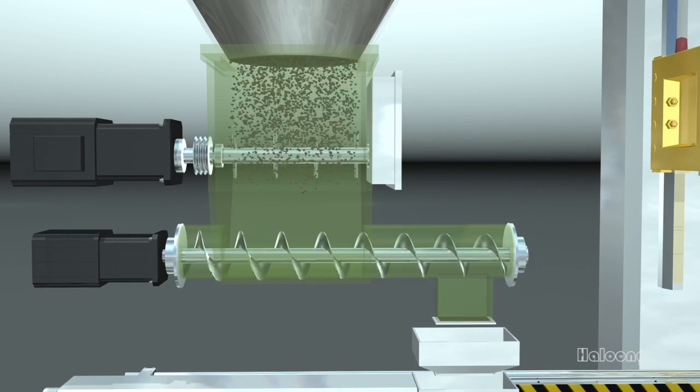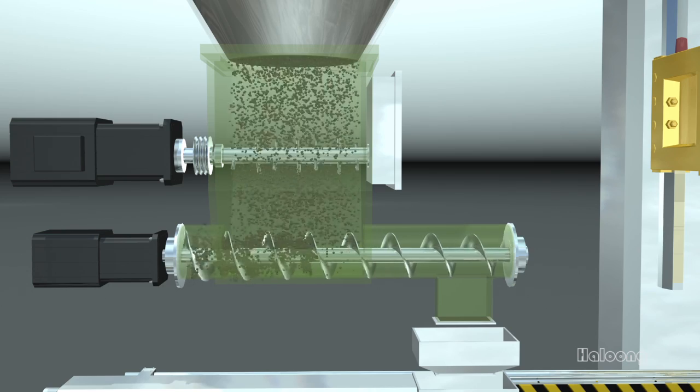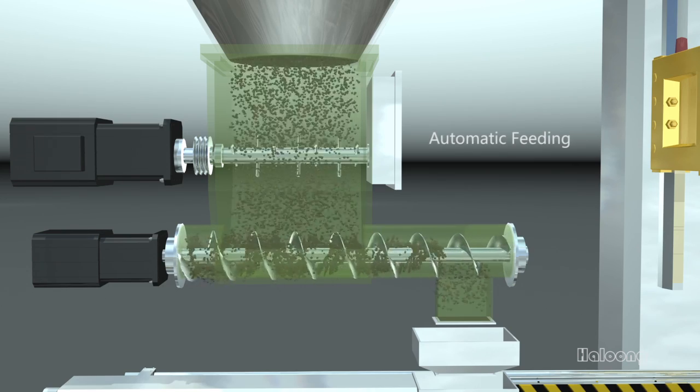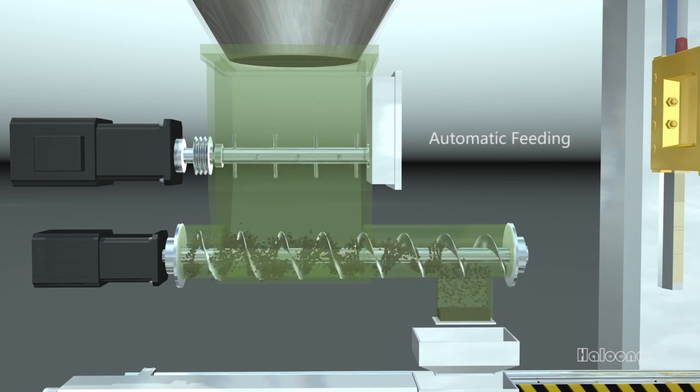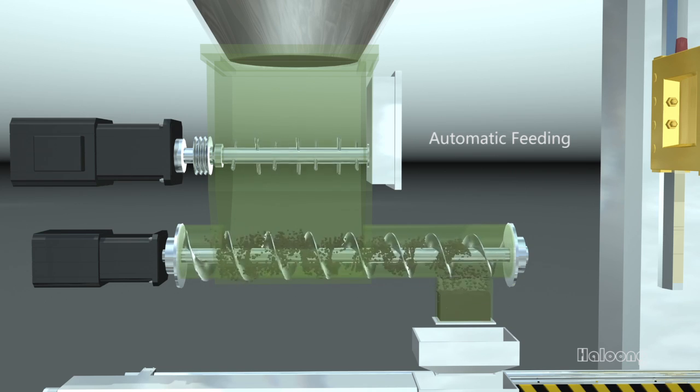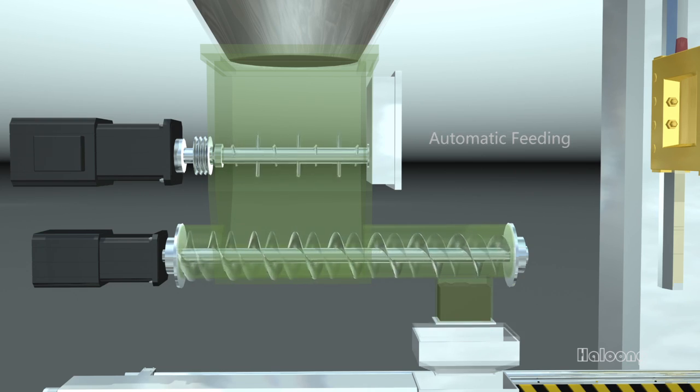The raw material comes out from the storage vessel after rotor mixing, then transported by the spiral feeding device into weighing vessel for automatic weighing.